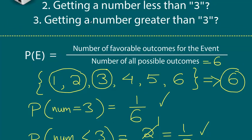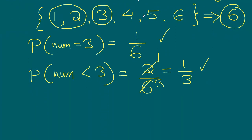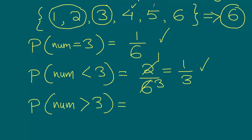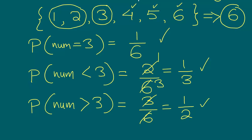Finally, the probability of getting a number which is greater than 3. Going back to all possible outcomes, we need to get either 4, 5, or 6 on top. If we get any of them, those outcomes support our event. So 3 outcomes are favorable, giving us 3 divided by 6, which simplifies to 1/2. This is how we calculate the probability of events involving rolling a dice.